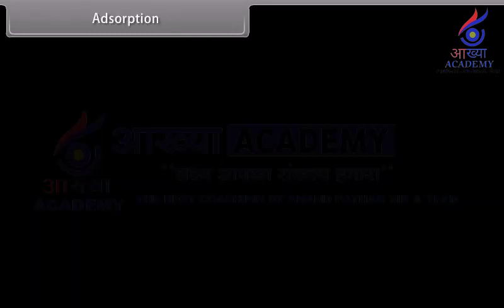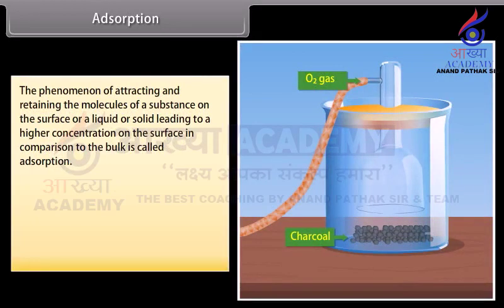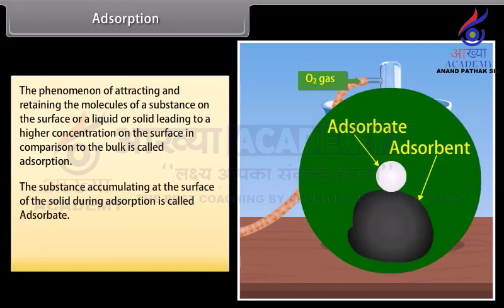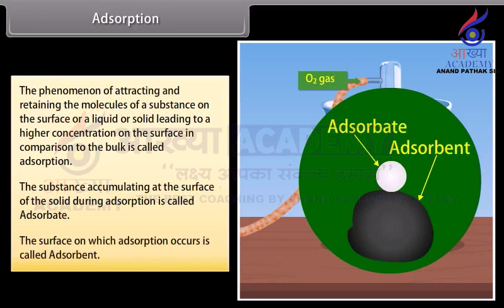Adsorption. The phenomenon of attracting and retaining the molecules of a substance on the surface of a liquid or solid, leading to a higher concentration on the surface in comparison to the bulk, is called adsorption. For example, when oxygen gas is taken in a closed vessel containing powdered charcoal, the pressure inside the enclosed vessel decreases. This is due to adsorption of the gas molecules on the surface of charcoal. The substance accumulating at the surface of the solid during adsorption is called adsorbate. The surface on which adsorption occurs is called adsorbent.